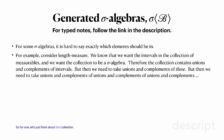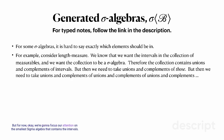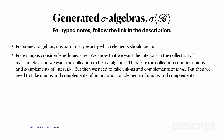For now, let's focus our attention on that collection — only much later will we get around to talking about the fuller collection of measurable subsets of real numbers. We're going to focus on the smallest sigma algebra that contains the intervals. If you think about trying to characterize what sorts of things are in that collection, it can be fairly complicated, because there's an infinite iterative process to keep capturing more and more of those things.